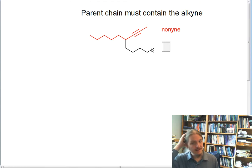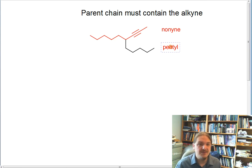And then this substituent here has 1, 2, 3, 4, 5 carbons on it in a straight line. This is the pentyl substituent.